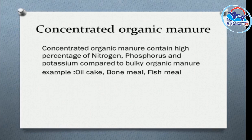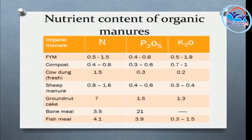Concentrated organic manures include bone meal and fish meal. Bulky organic manures include farmyard manure. Composting provides nitrogen, phosphorus, and potassium as part of concentrated organic manure.